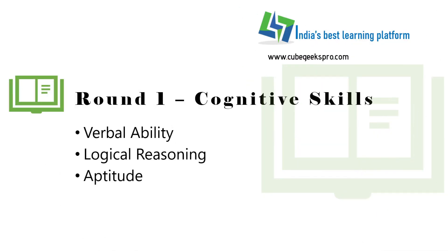TCS Round 1 is based on cognitive skills and coding skills. In this video, we will discuss about the cognitive round. In our next videos, we will discuss about the coding round. The cognitive round has 3 sections that includes verbal ability, logical reasoning and aptitude.